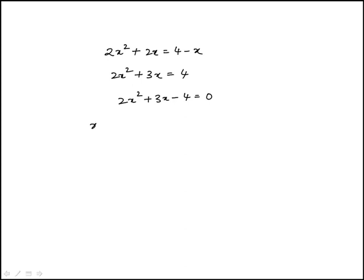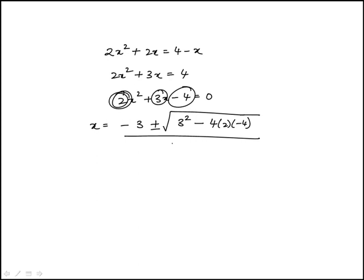So this would be minus 3 plus or minus square root of b squared, which is 3 squared, minus 4 times ac, so that would be 2 times minus 4, divided by 2a, which is 4.